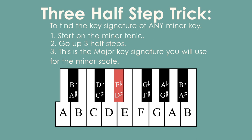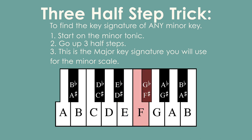This is true for any other minor scale. If we want to know the key signature for E minor, we start on E and go up three half steps, and we get G. So E minor uses the same key signature as G major.